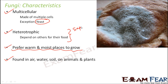Some fungi are saprotrophic, which we are going to discuss in detail. However, some can also be parasitic — they can live inside the body of another plant or animal and cause diseases in them. In human beings, fungal diseases, especially skin infections, are very common. That is fungi living in the body of human beings, causing harm and getting its nutrition from the human body. So some fungi are parasitic, some are saprotrophic.